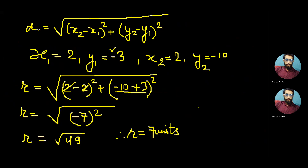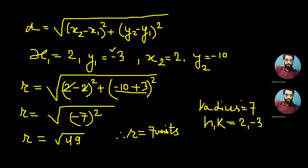Now we have found the radius of the red circle, which is 7 units, and the center (h, k) of the red circle, which was already given as (2, -3). We will use these values of radius, h, and k in the standard form of the circle equation to get the equation of the required circle.